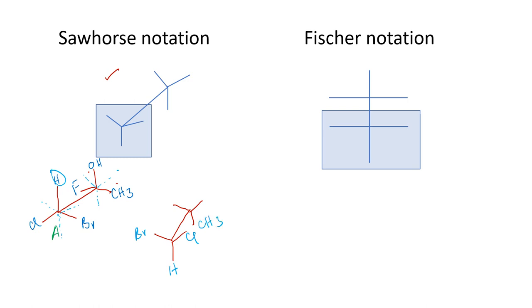So CH3 will come down. Fluorine will be here and, sorry, OH will come down. Here it is OH which is on top. So OH will come down and then CH3 will come here. So these two structures are equivalent. This is how we have to convert an inverted Y into a Y form. Only when you convert the sawhorse into Y form you can convert it into a Fischer's notation.